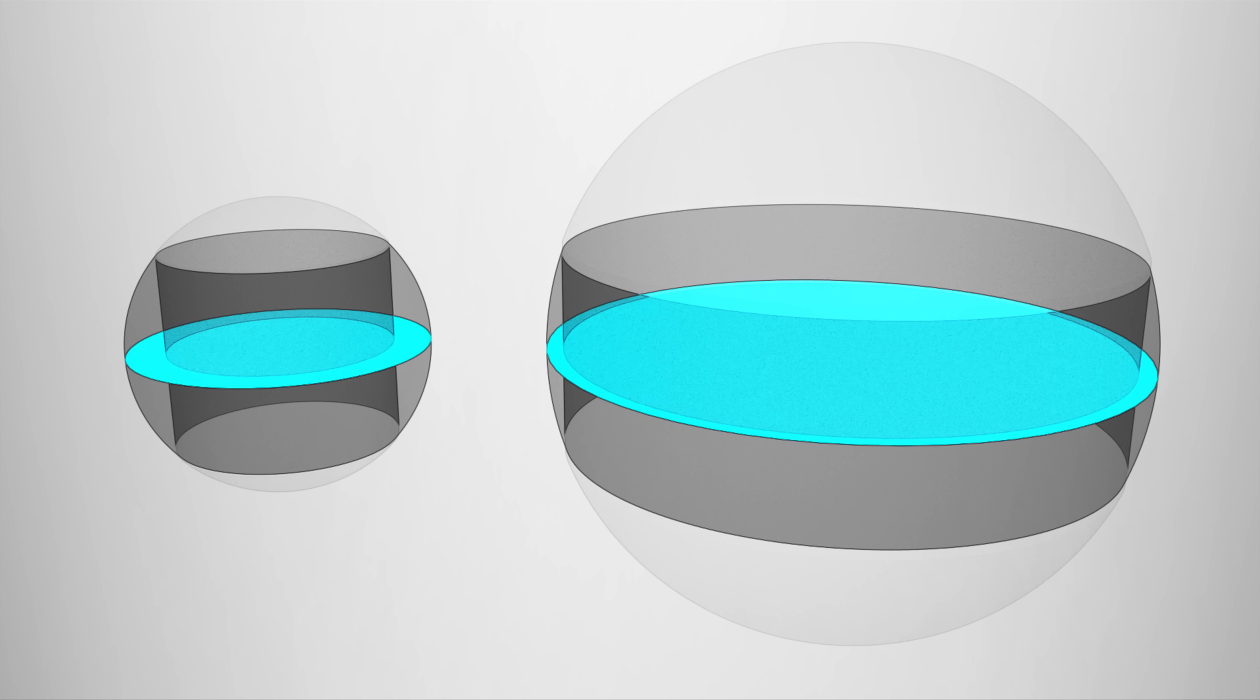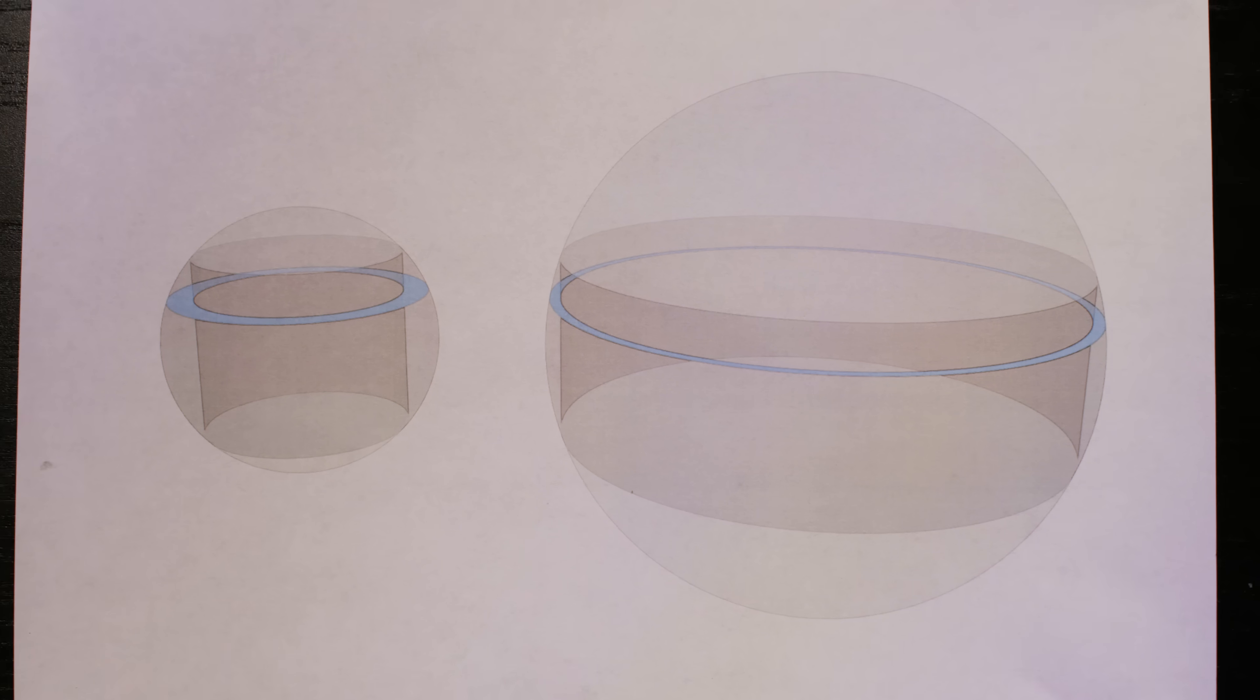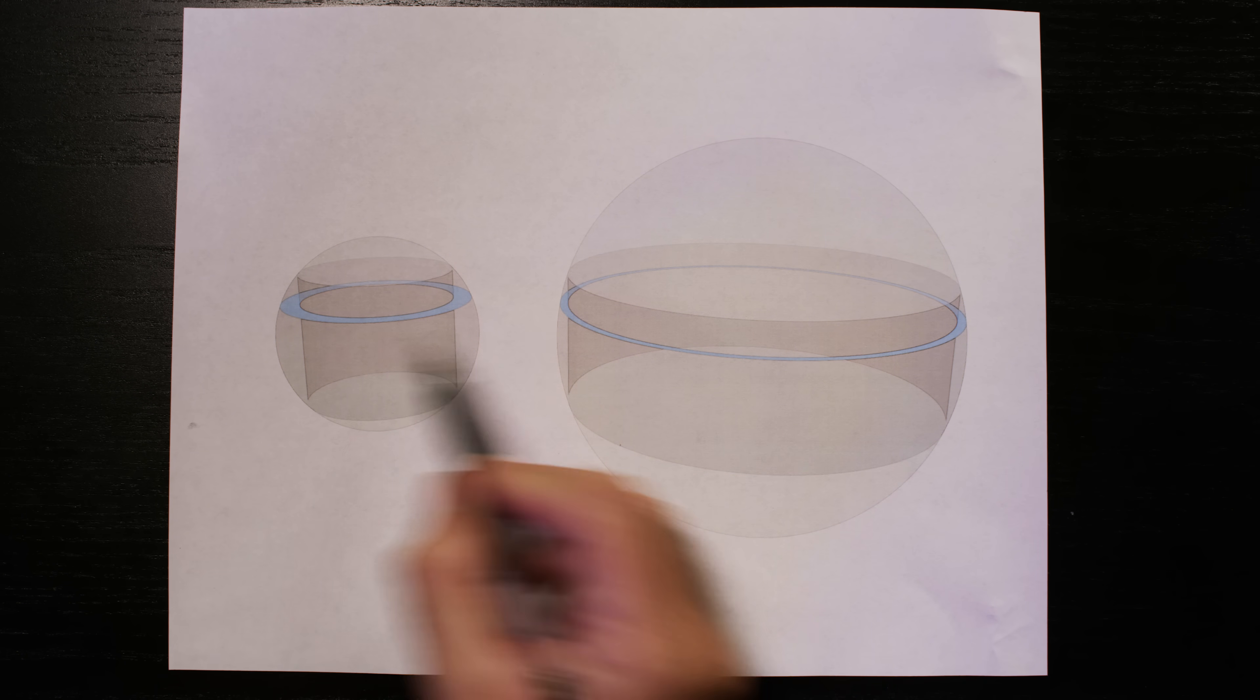Now to do this, notice that the area of the sphere's cross section minus the area of the cylinder's cross section gives us the area of the napkin ring's cross section. Depending on where we slice the napkin ring, the cross sections will have different areas, but they will always be the same as each other. Let's calculate the areas of these blue rings.